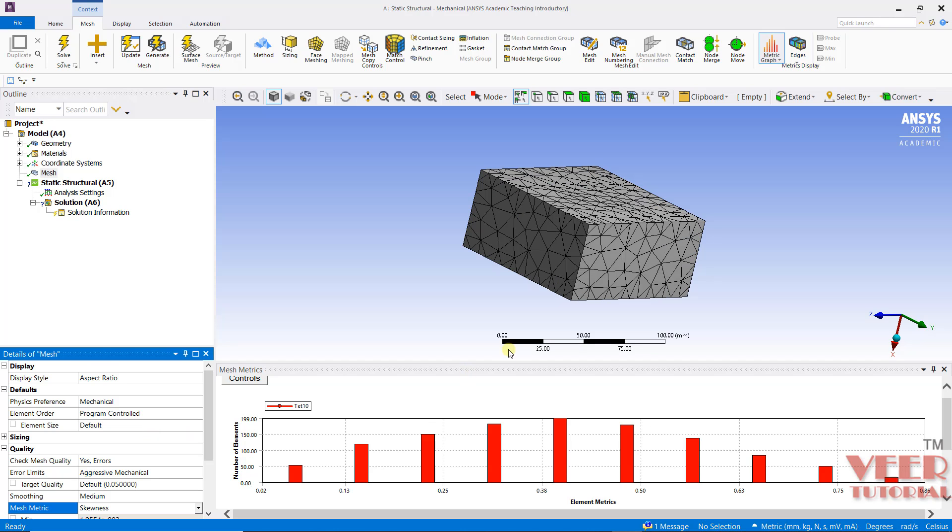Just like we have skewness, on the horizontal side, we have all these values like this is 0.13, 0.25, 0.38. Now let's understand what are these element quality.